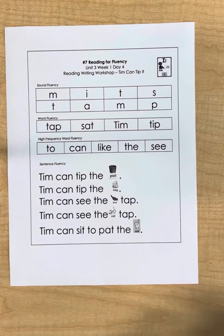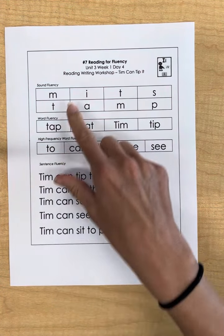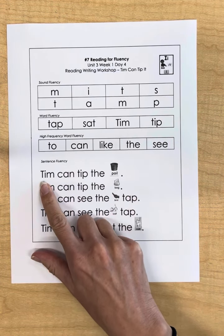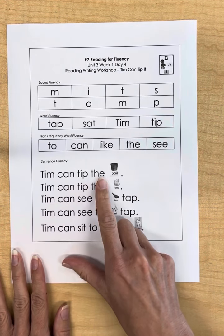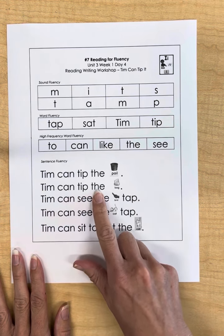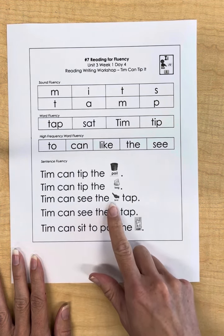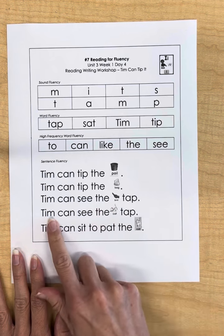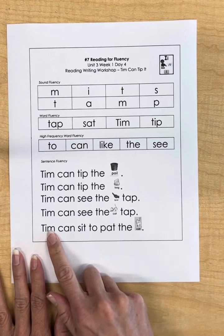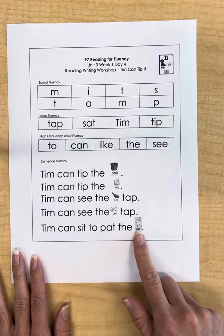Now you're going to have them read the decodable using all of the blending words and the high frequency words. Tim can tip the pail. Tim can tip the bag. Tim can see the bird tap. Tim can see the cat tap. Tim can sit to pat the cat.